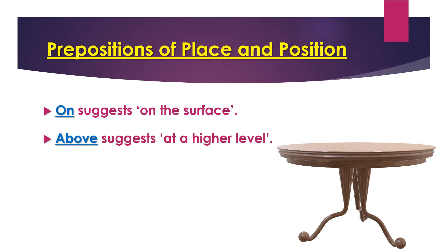The preposition 'above' suggests at a higher level. The higher level can be anywhere — towards the left, towards the right — but it has to be higher than the object we are talking about. So the football is at a higher level than the table, so we say the football is above the table.